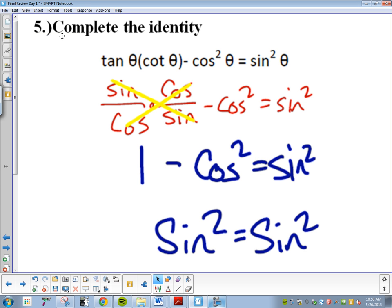Complete the identity. So this was something we did a lot of at the time. Complete the identity. We are taking tangent, cotangent, and cosine and trying to simplify it.